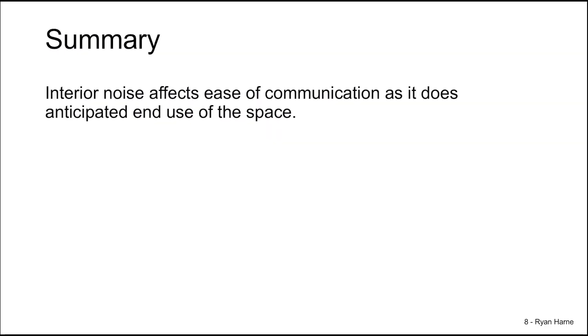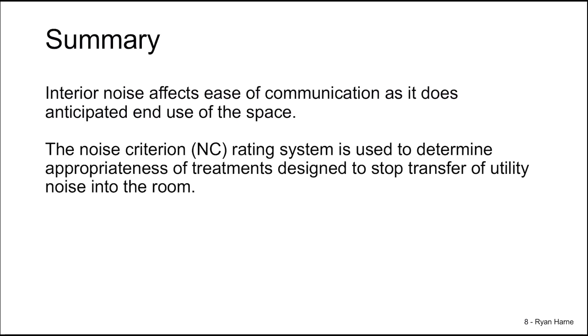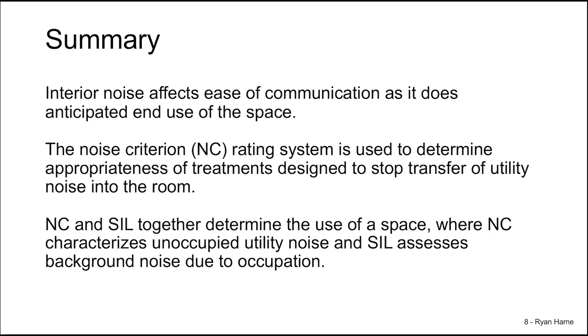To summarize what we've learned: interior noise affects the ease of communication and creates an anticipated end use of the space. The noise criterion, or NC rating system, determines the appropriateness of treatments designed to stop transfer of utility noise into the room. Together, the NC and the speech interference level, SIL, determine the use of the space. The NC characterizes the unoccupied utility noise, whereas the SIL assesses the background noise due to the occupation of the space. Now that we know all about sound level metrics used to characterize the quality of interior acoustics, in the next video we'll learn how to design acoustic walls and interiors to help meet these metrics.